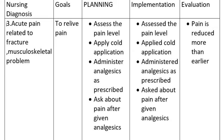Nursing Diagnosis 3: Acute pain related to fracture and musculoskeletal problem. Goal: To relieve pain. Planning includes: assess the pain level, apply cold application, administer analgesics as prescribed, and ask about pain after giving analgesics.